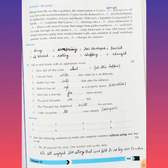Number three: Sudhir has run into debt after the inflation. Number four: Mahesh has set up as a property dealer. Set up - establish. Number five: Aarti has a craving for more money.